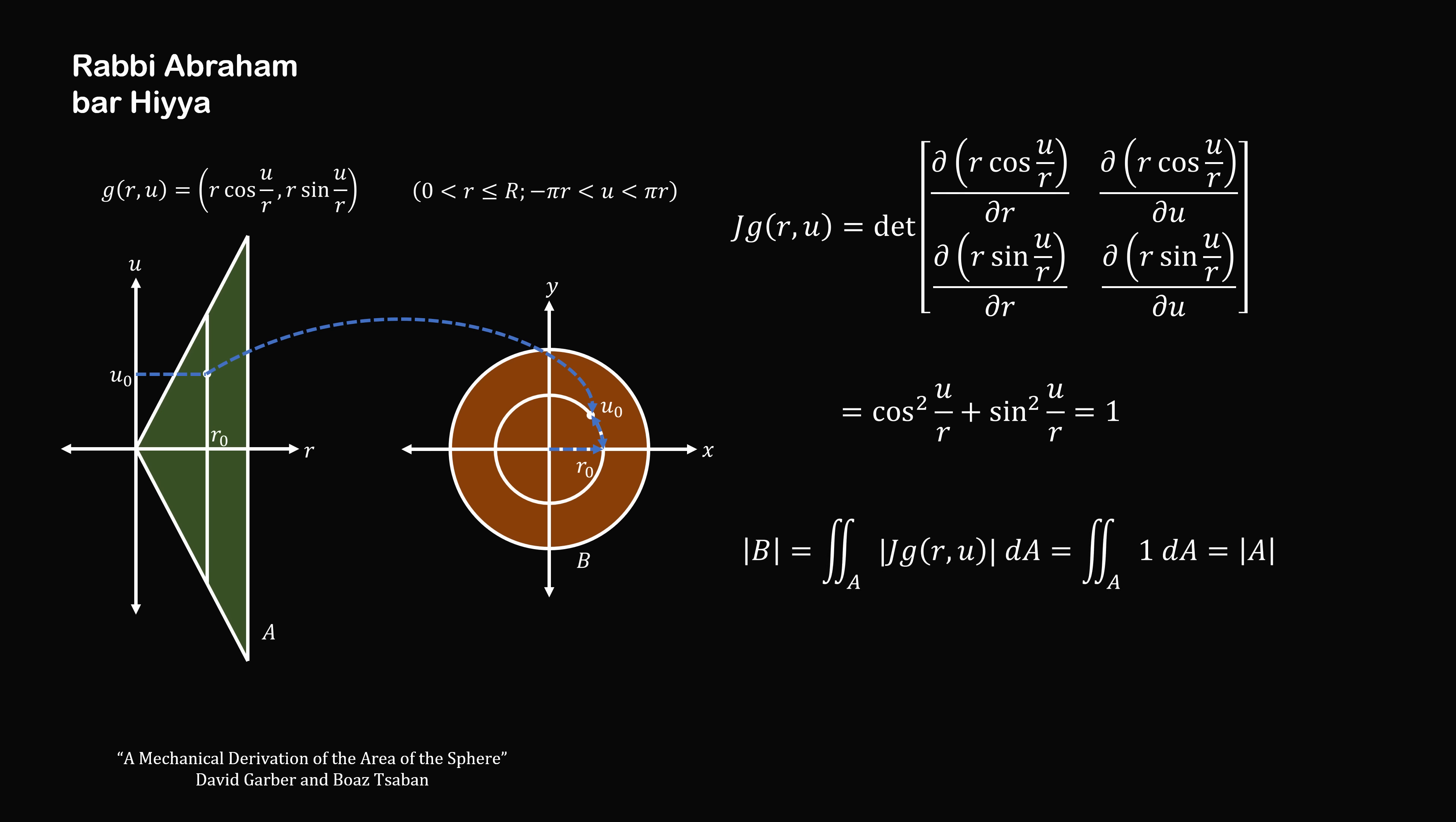Finally, the area of the circle will be equal to this double integral, and this all simplifies to be equal to the area of the triangle. And therefore, it is in fact true that this method can be made completely rigorous, and stand the test of time.